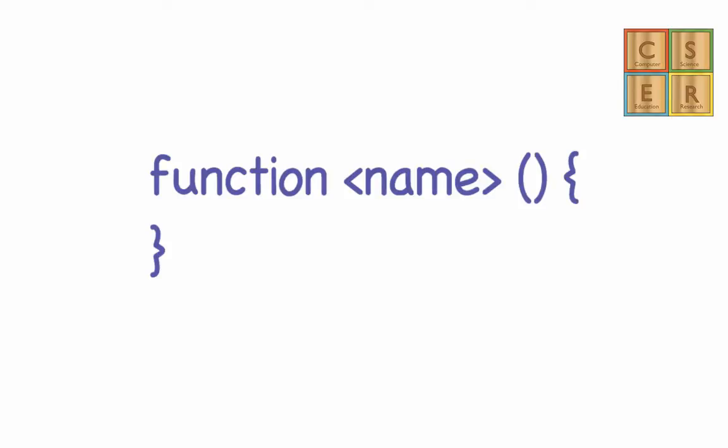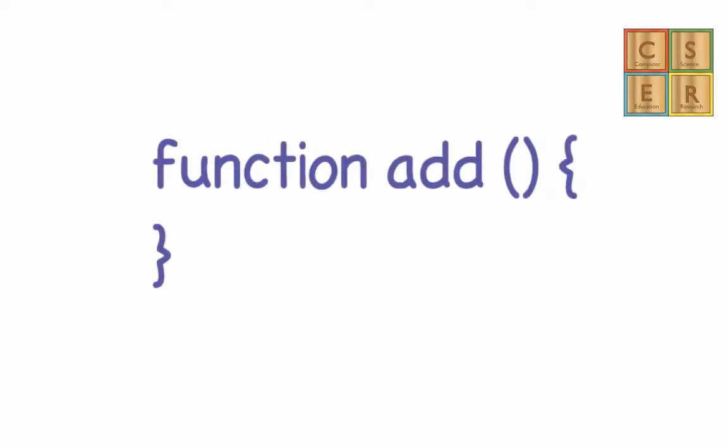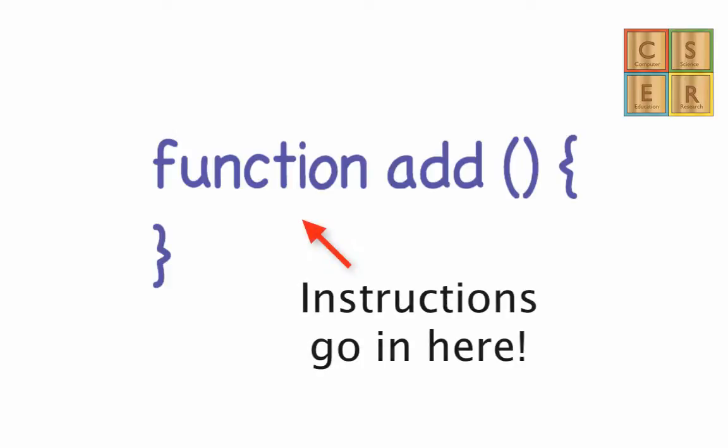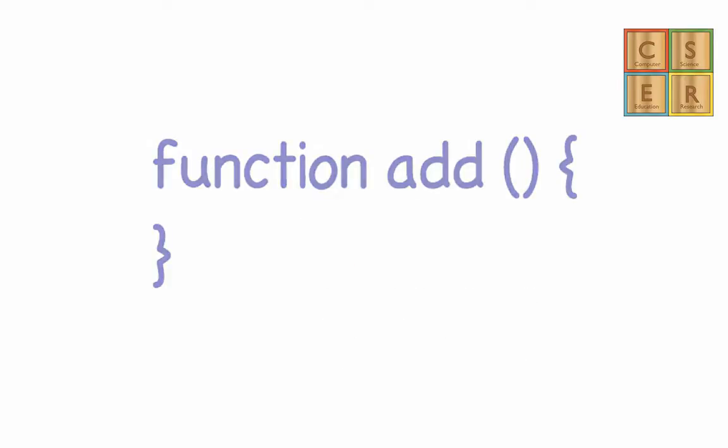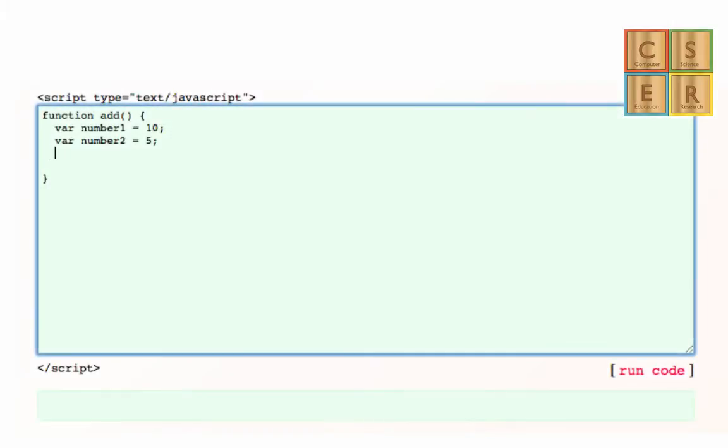This tells us that we are creating a new function. The name part of our template needs to be filled in. So for example, for a function that adds, we might use the name add. We would then put the instructions to perform the add inside the function block. We could write it just for two numbers that we wanted to add together, for example like this.